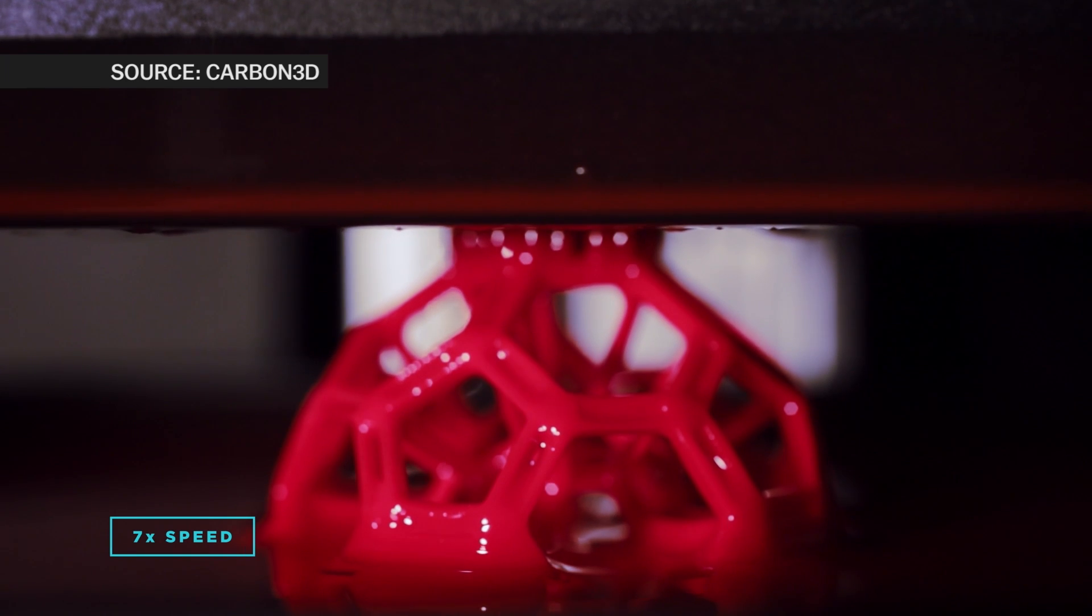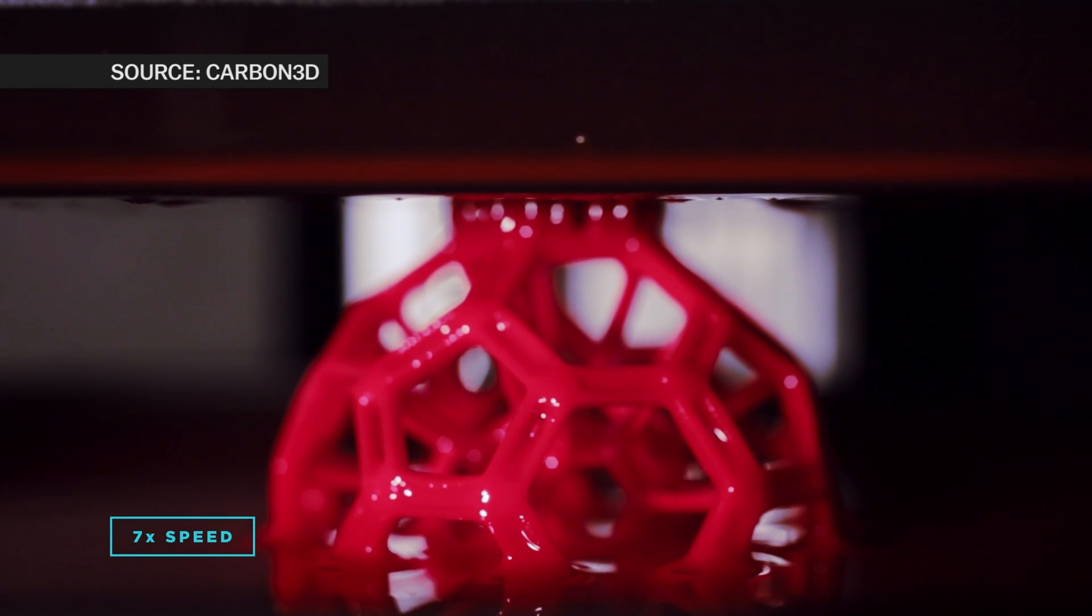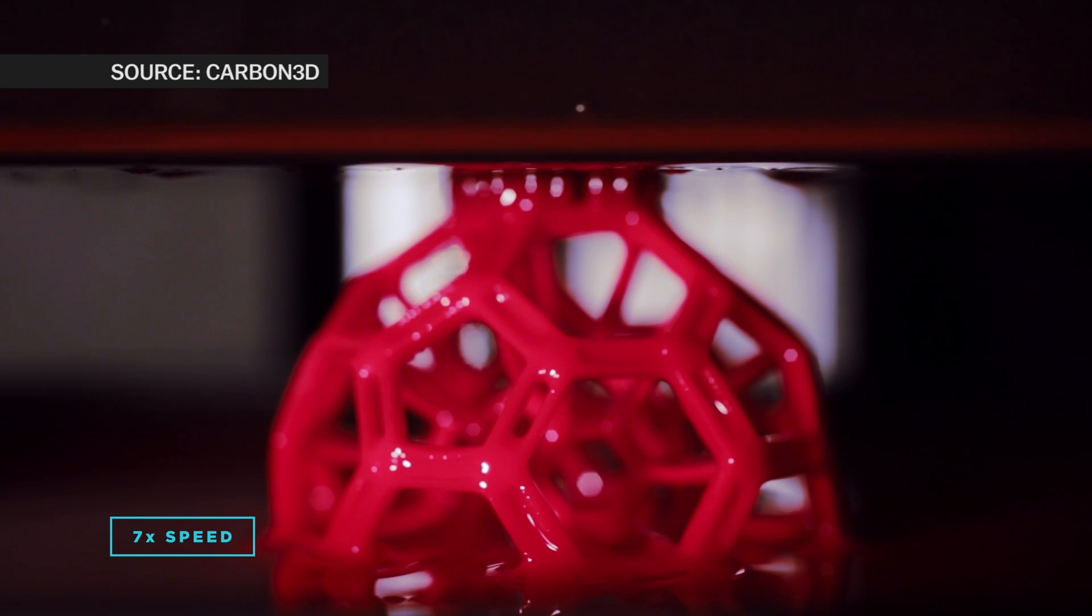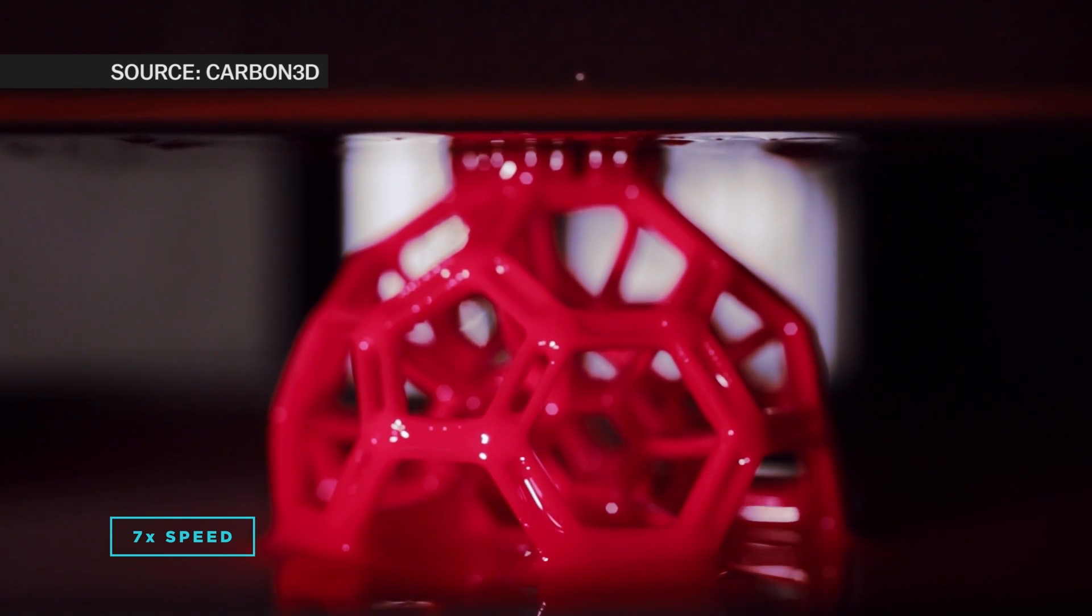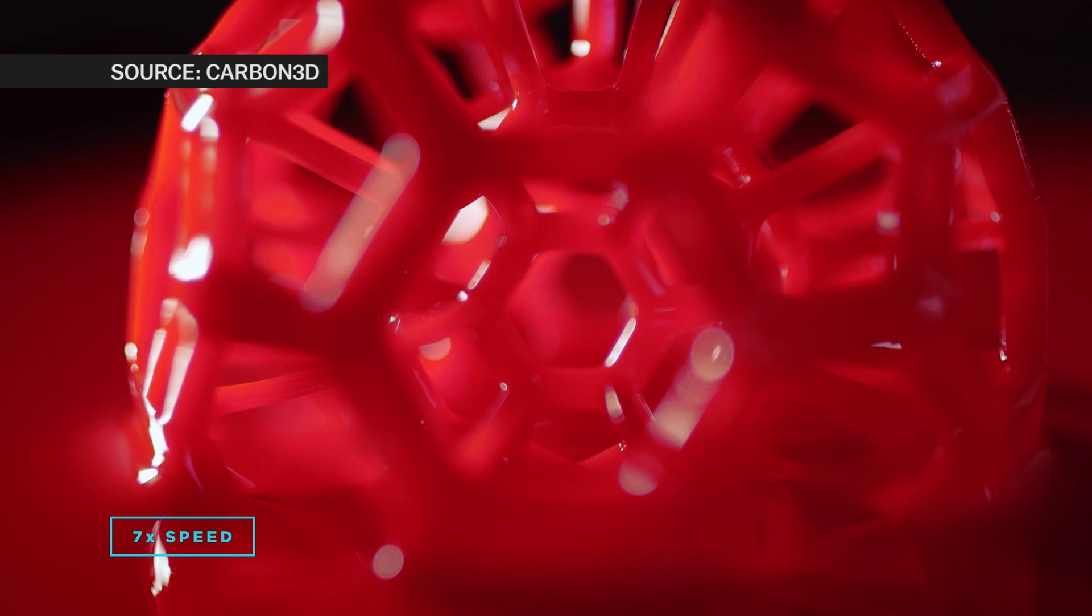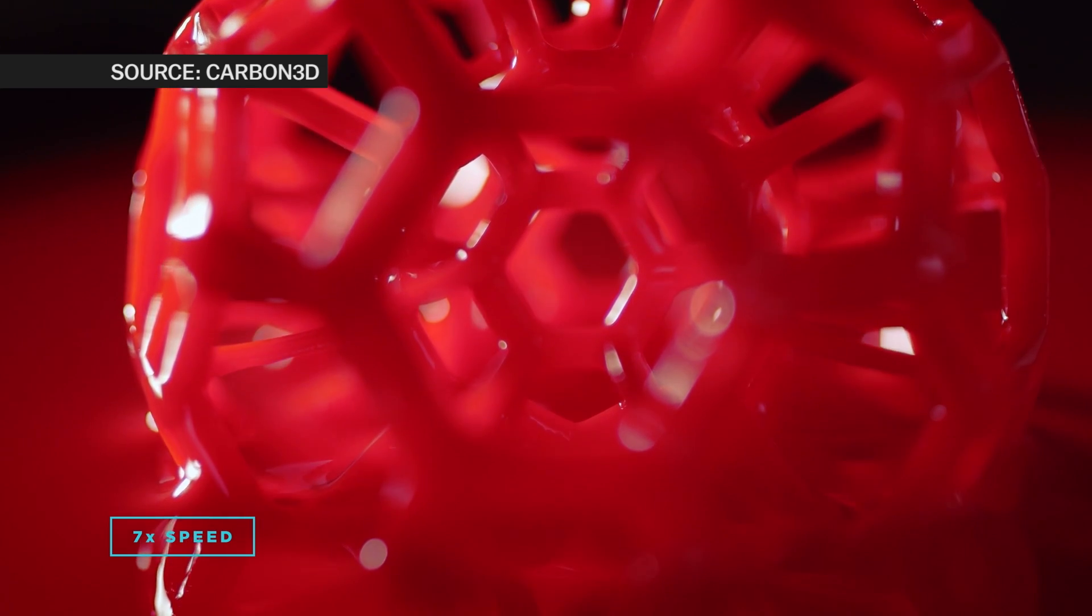So as the platform slowly moves upwards, the projector moves through the different images, the different cross sections, and that causes the object to form in the shape you want. Wherever there's ultraviolet light hitting it, that's where the plastic solidifies.